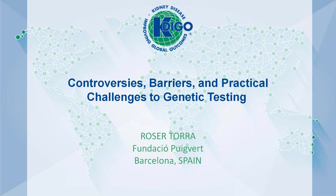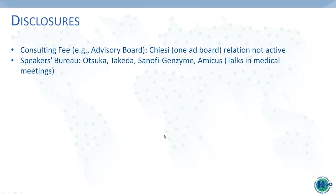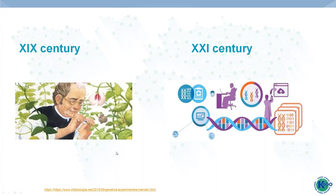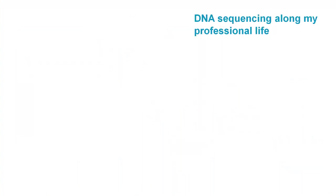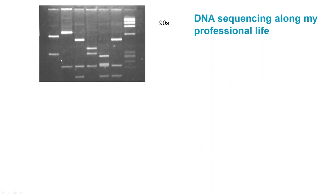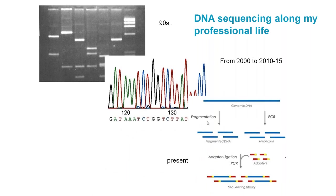Thank you very much, Jan, for this excellent talk. Thanks also to Katie for organizing this series of webinars. My name is Rosa Toral. I'm an adult nephrologist in Barcelona and my field of interest is genetic kidney diseases. I'll mainly talk about challenges to genetic testing. A lot has changed since Mendel in the 19th century through to the 21st century with NGS, spanning my own professional journey from polyacrylamide gels to Sanger sequencing and now NGS.